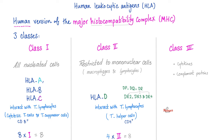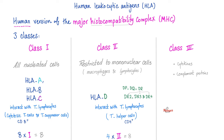MHC class 1 is found in all nucleated cells — the redundant tray. MHC class 2 is restricted to mononuclear cells such as lymphocytes and macrophages — the special tray. Class 1 MHC interacts with CD8 T-lymphocytes, the cytotoxic T cells. Class 2 interacts with CD4 T-lymphocytes, the helper cells.